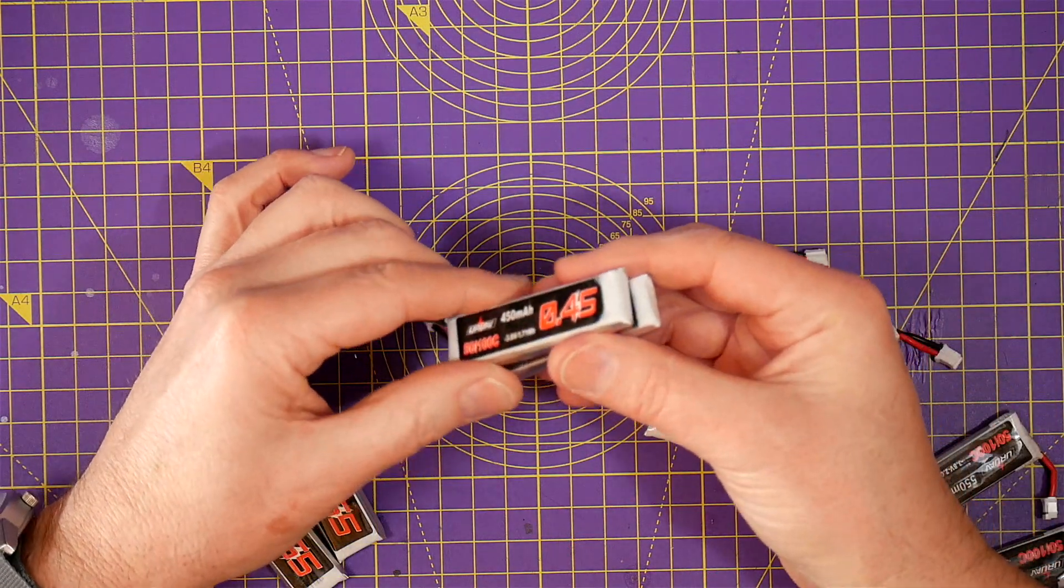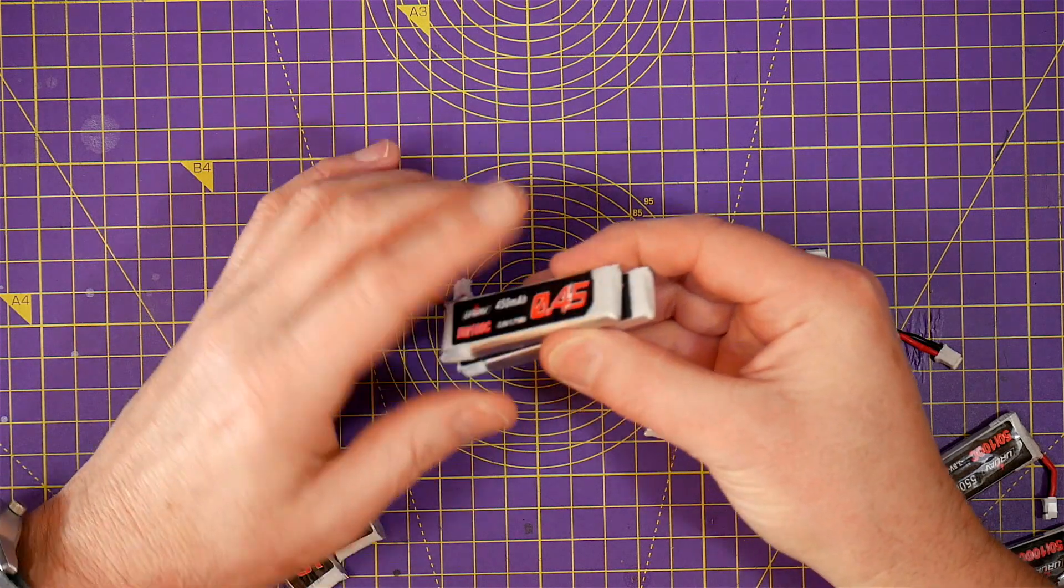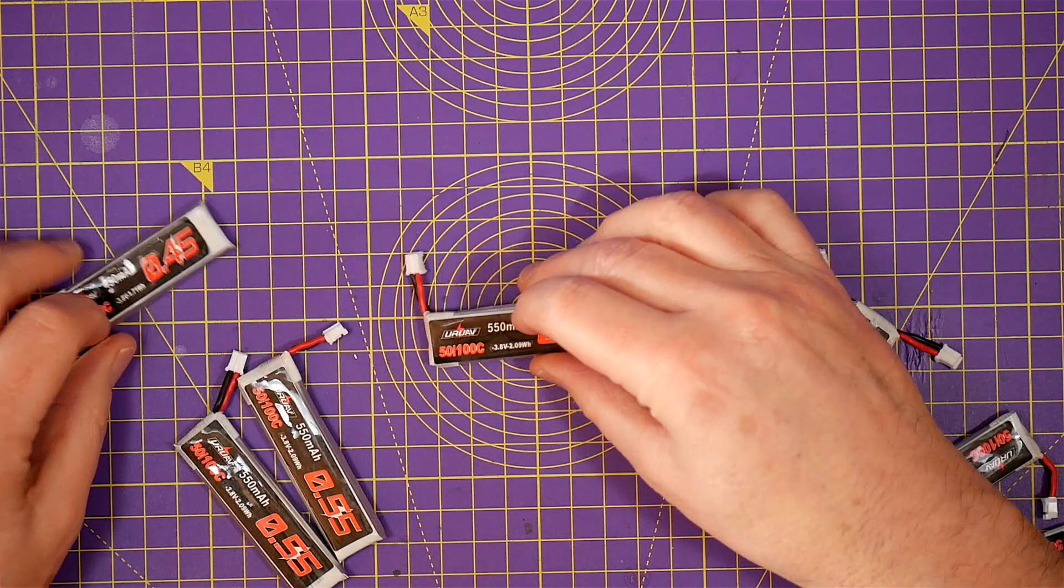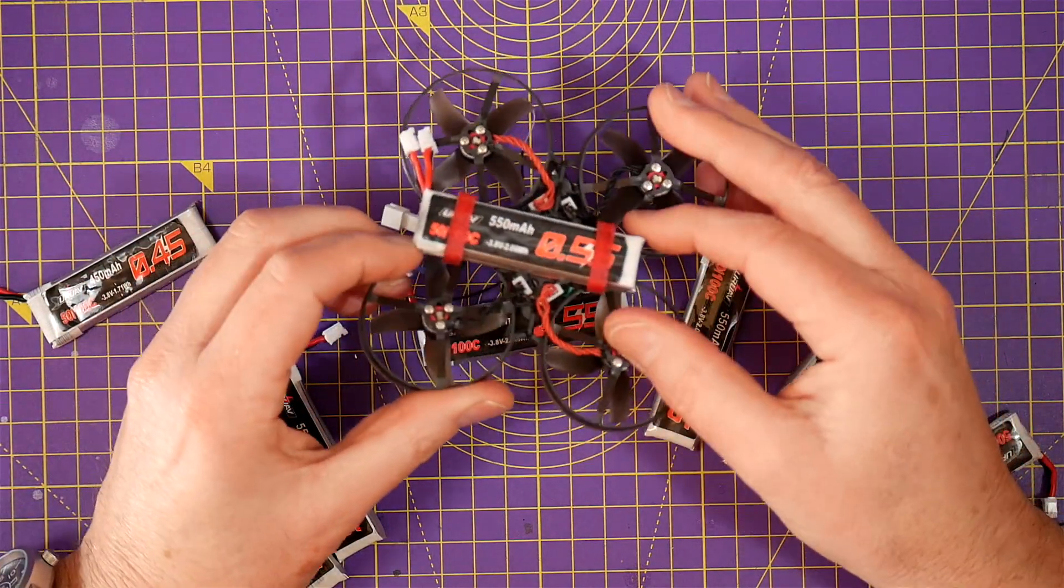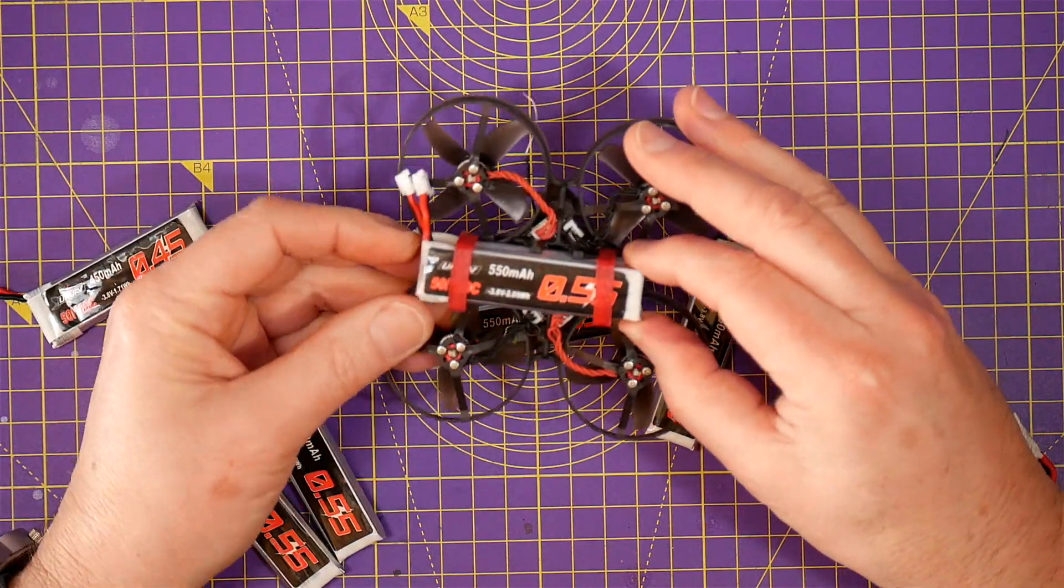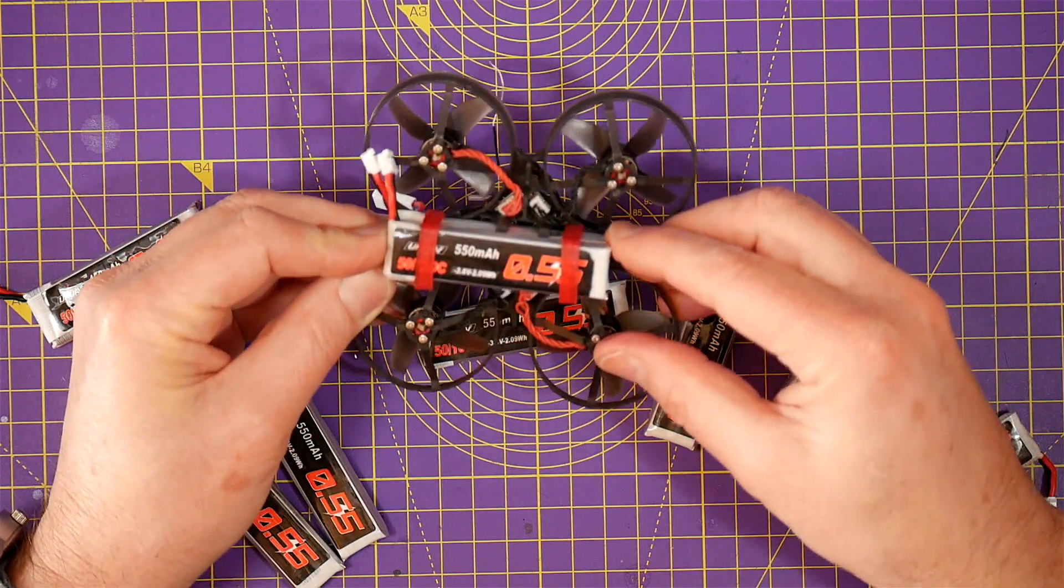These are only slightly larger than the 450mAh ones, they're a little bit longer, you can see here. But the 3D printed battery strap I designed to hold two of them together still works fine. And I'll leave a link in the description below where you can download the STL file if you want to print it yourself.